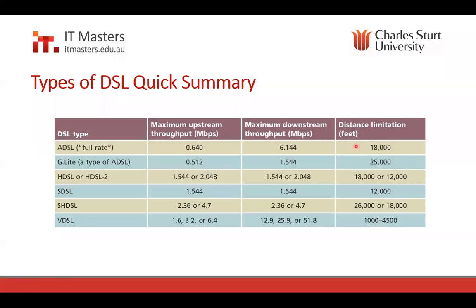Here's a quick summary slide showing the differences in maximum upstream and downstream throughput and the distance limitation — this is why we need repeaters with DSL technology. You'll notice that in general, as speed increases, particularly for downstream speed, the distance limitation gets shorter and shorter. That's true for most WAN technologies: the faster the speed, the lower the latency and noise tolerance required, meaning cabling needs to get shorter and some methodology for repeating or regenerating the signal is needed.